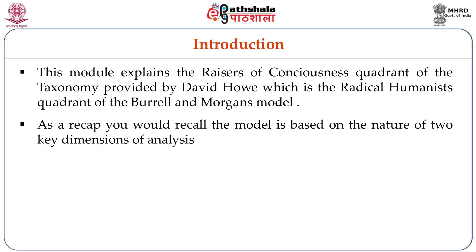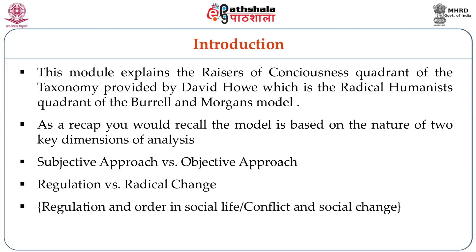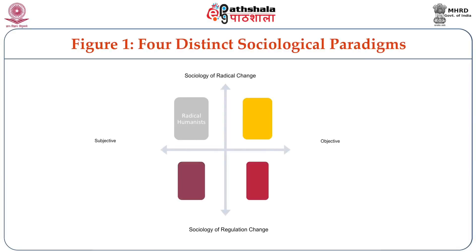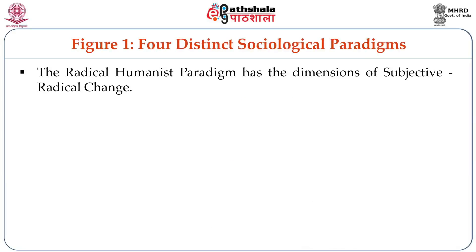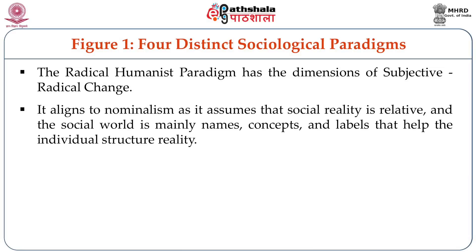As a recap, you would recall the two important dimensions: subjective approach versus objective approach, and regulation versus radical change. If you look at figure one, the radical humanist paradigm is ensconced by the dimensions of subjective and radical. It aligns to nominalism as it assumes that social reality is relative and the social world is mainly names, concepts and labels.